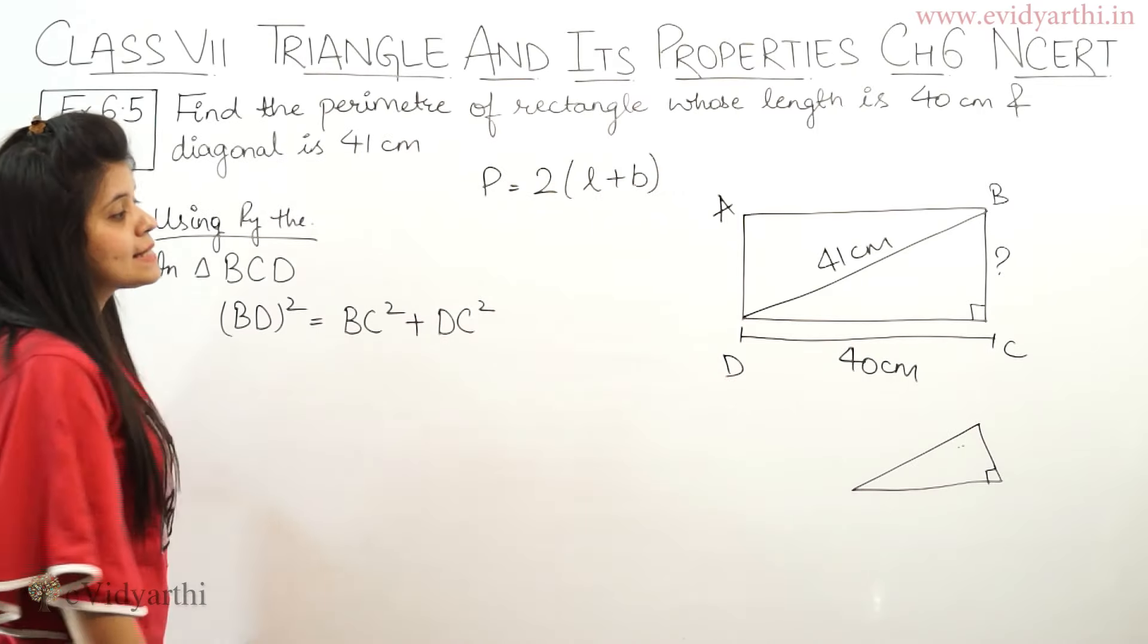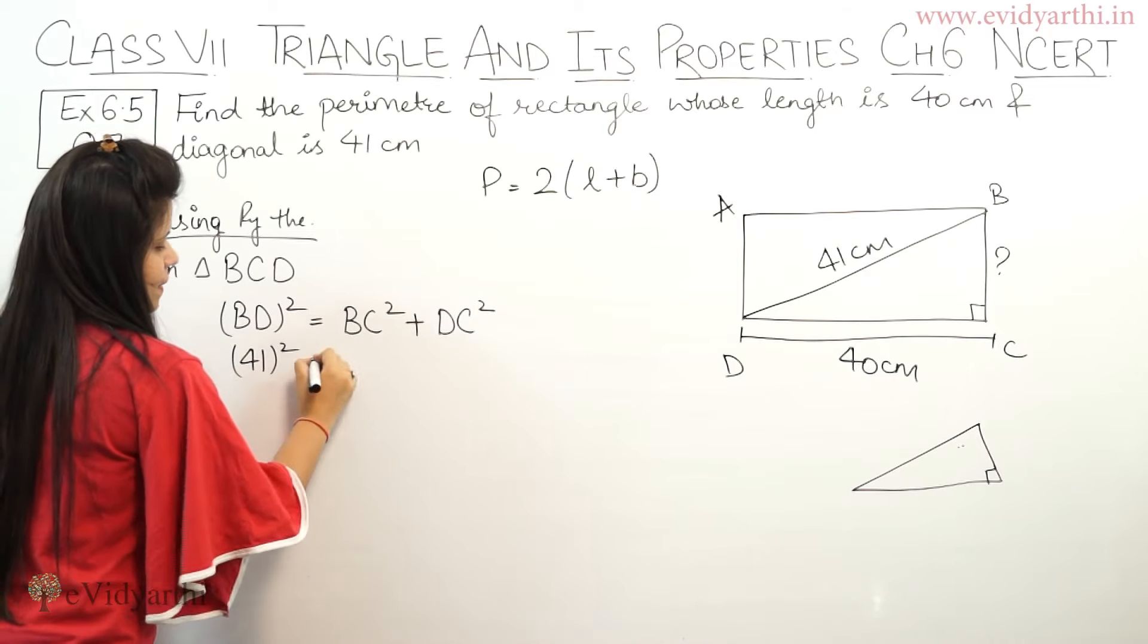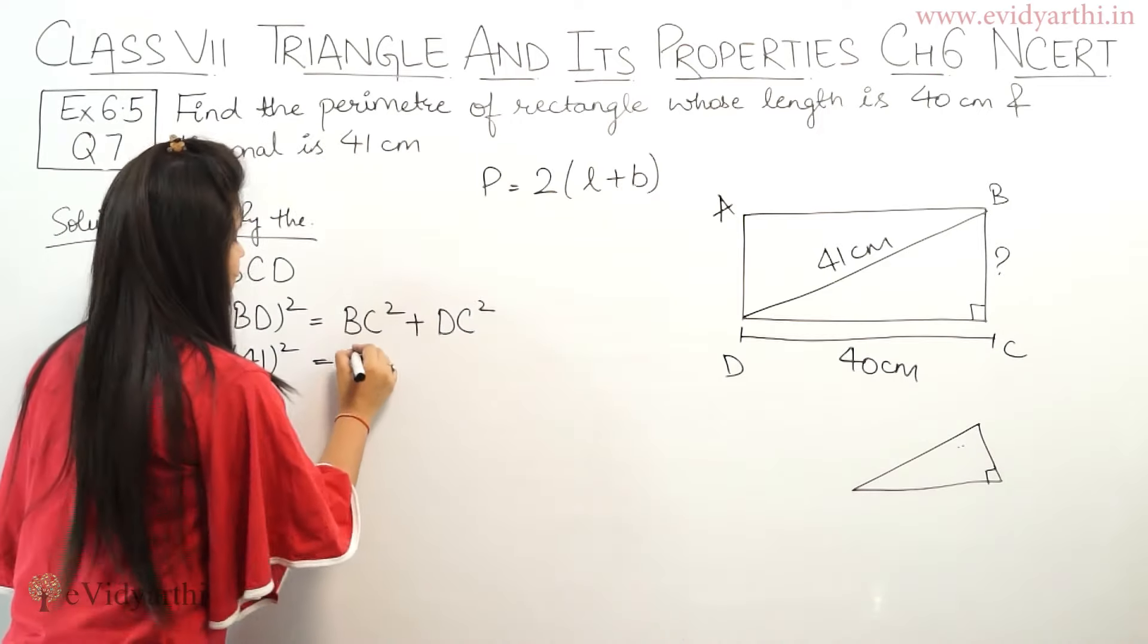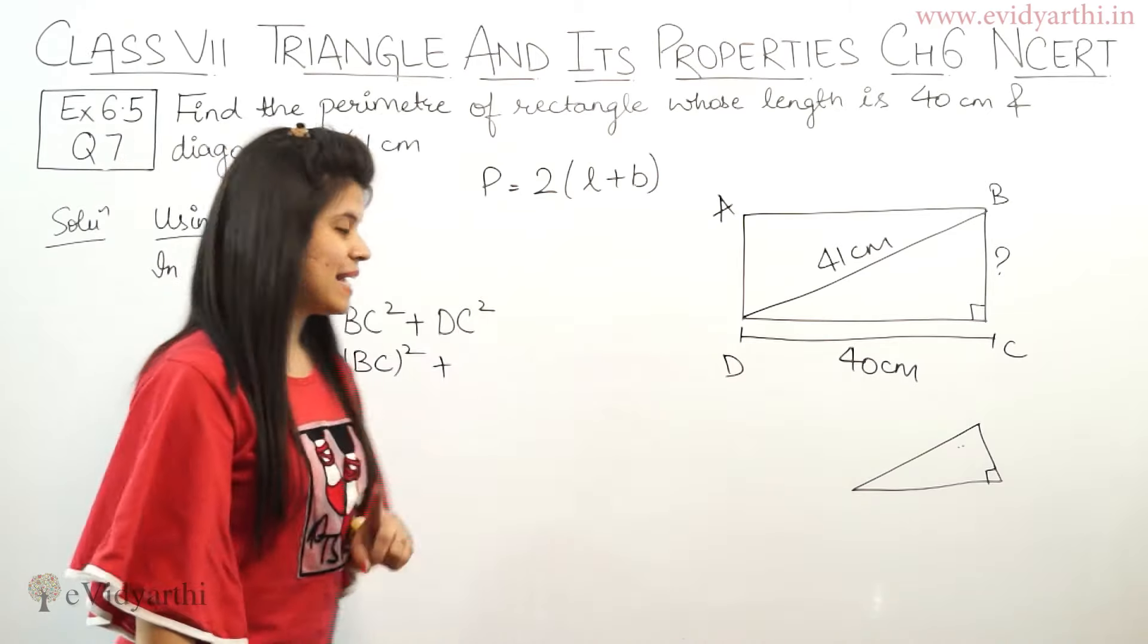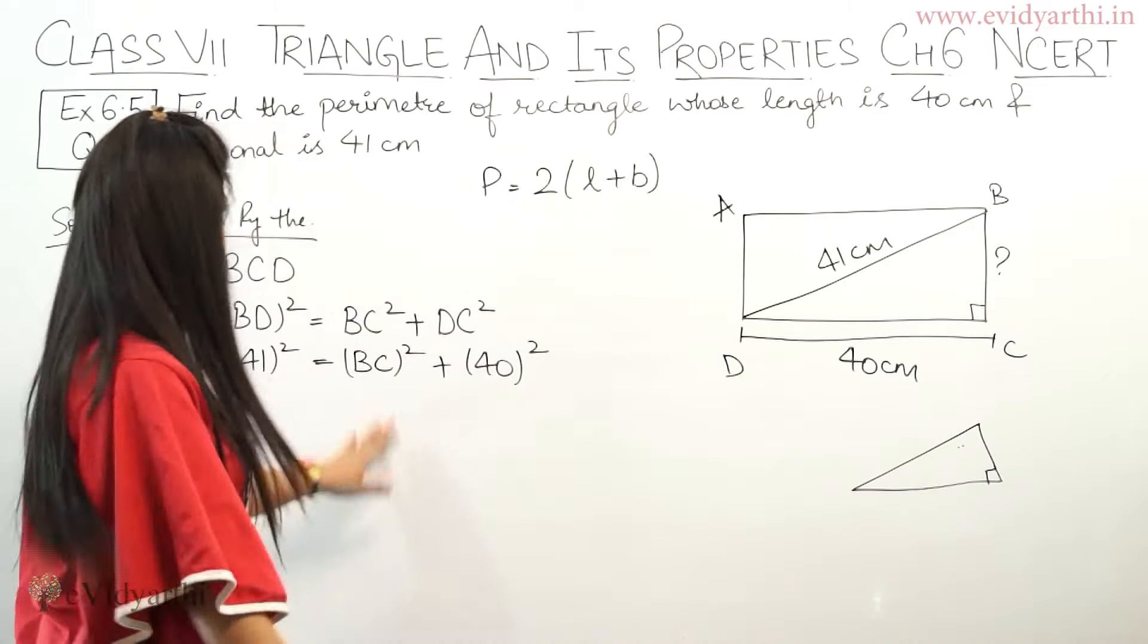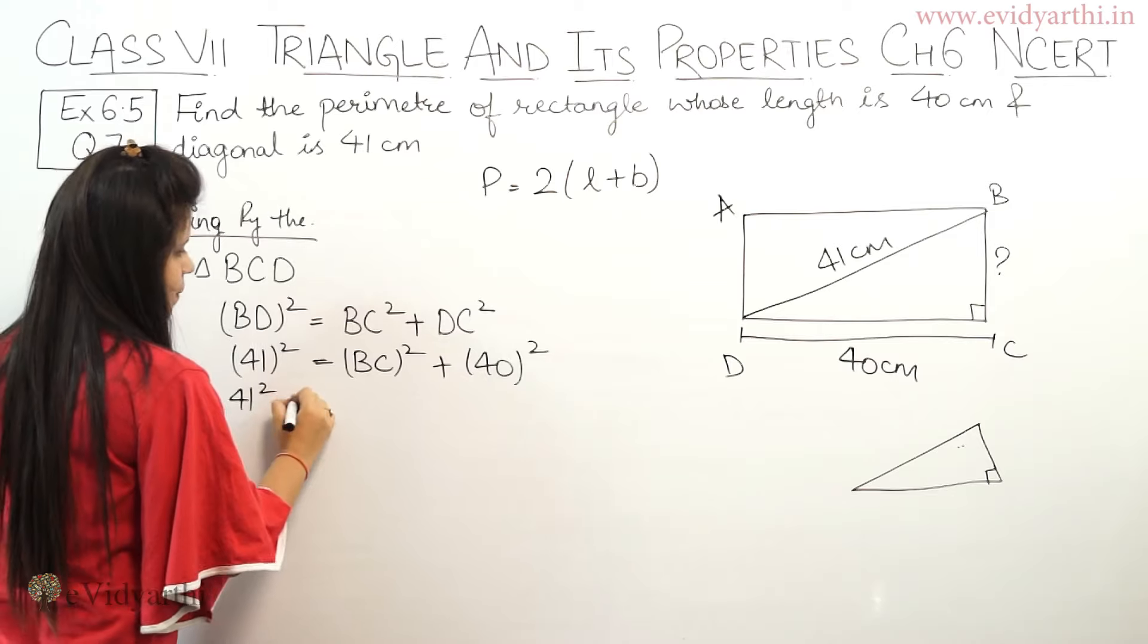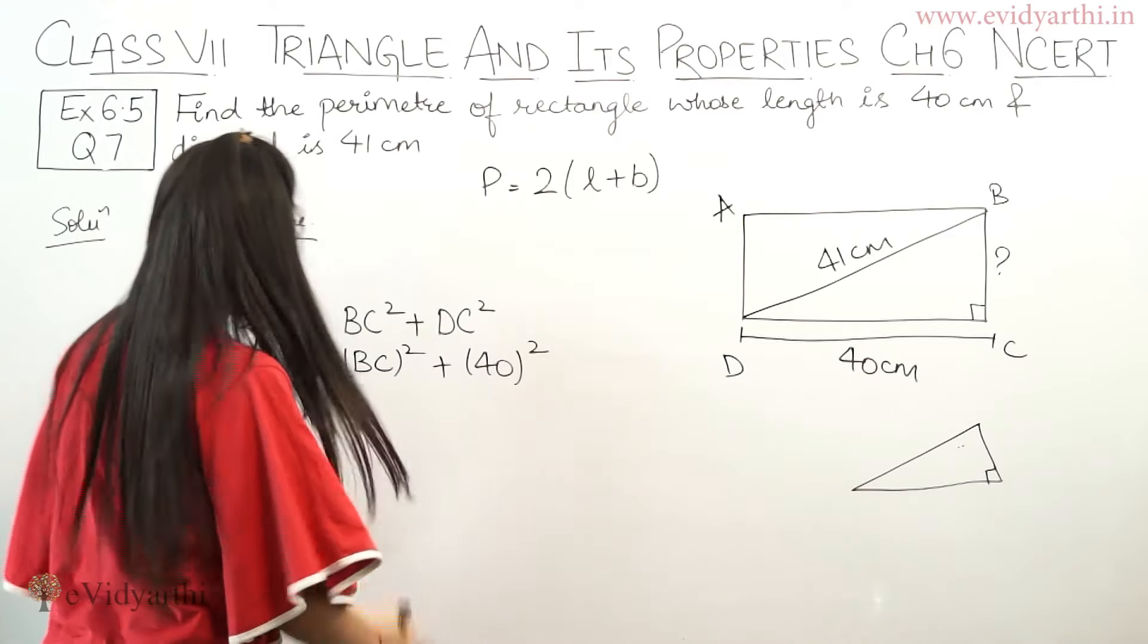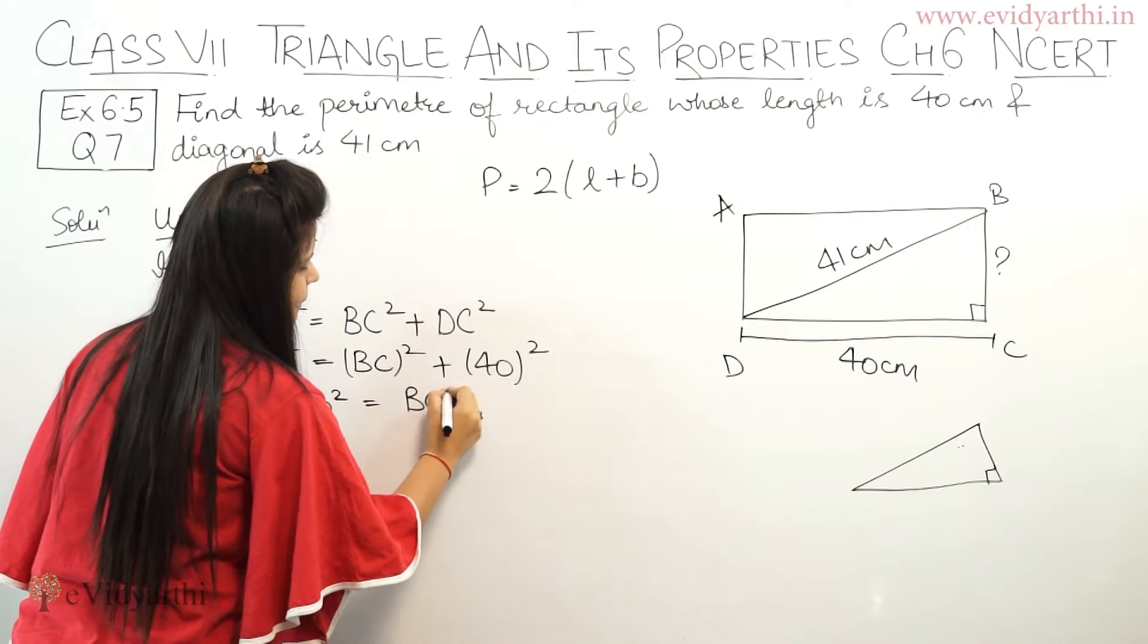So BD we have. So we can write BD as 41 squared equals to BC squared. BC we don't have, so we write BC as it is, plus DC. DC we have which is 40 squared.